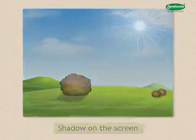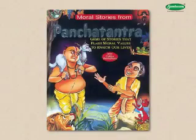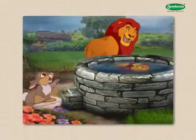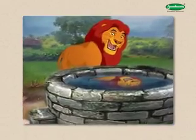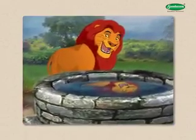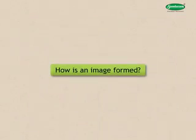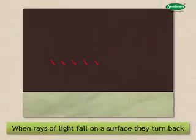Look at this picture. Do you remember the story from the Panchatantra about the lion and the rabbit? When the lion in the story looked down into the well, he saw another lion — it was the image of the lion formed in the water. How is an image formed?